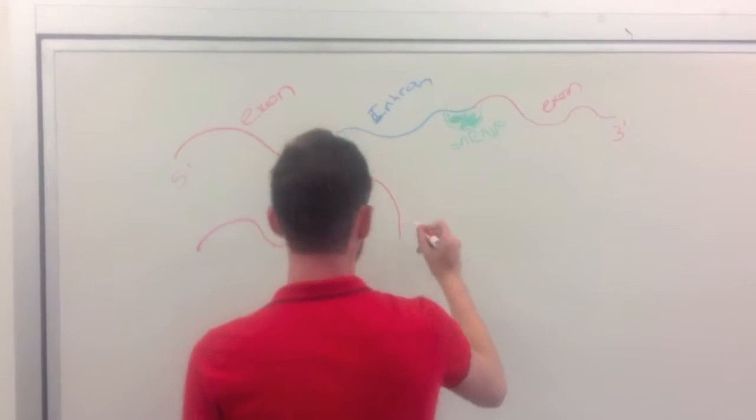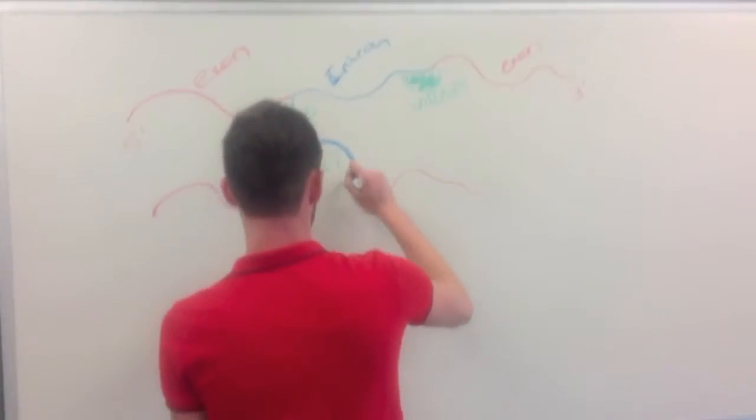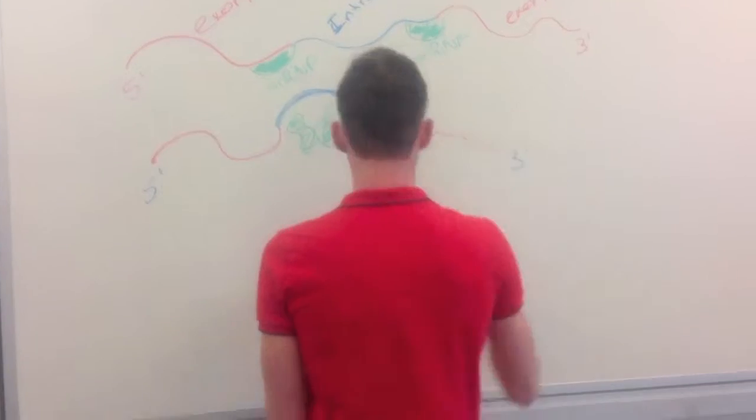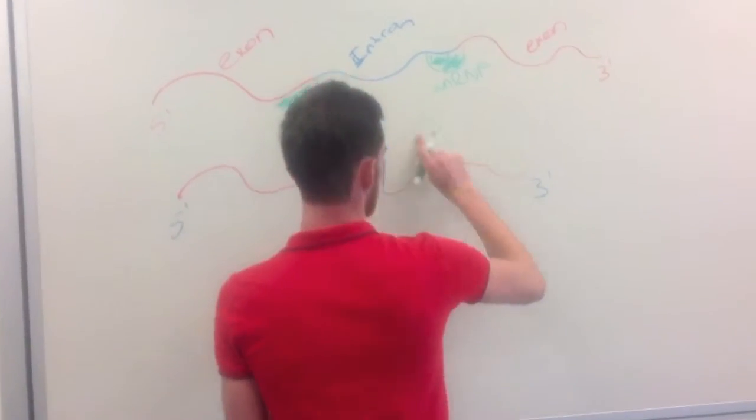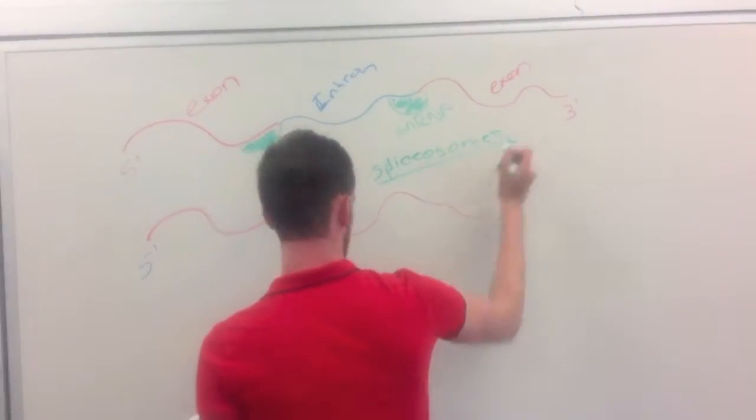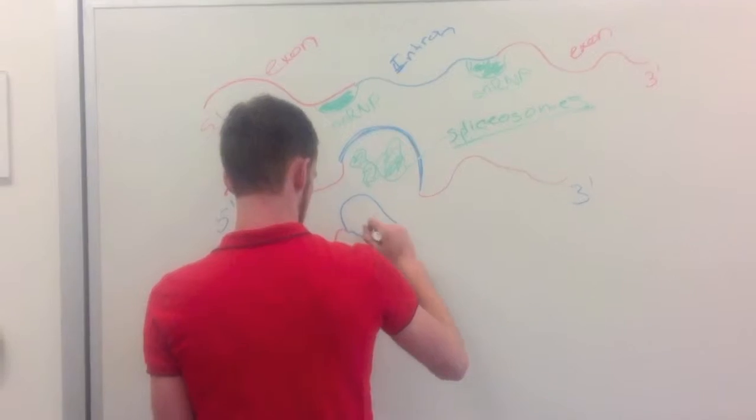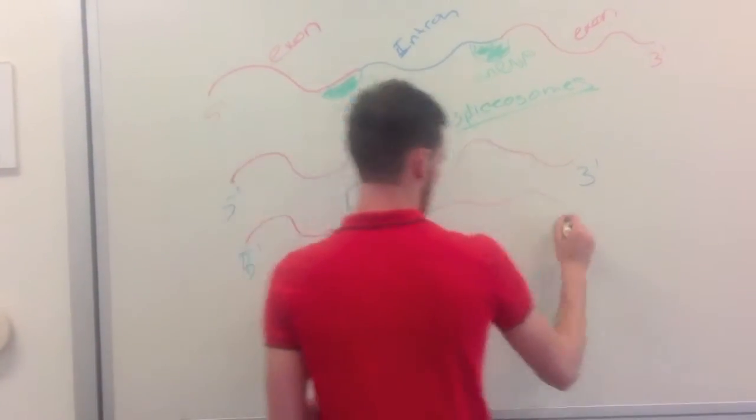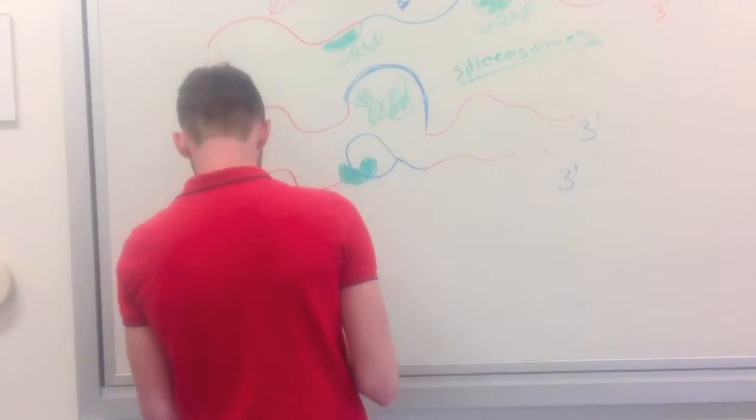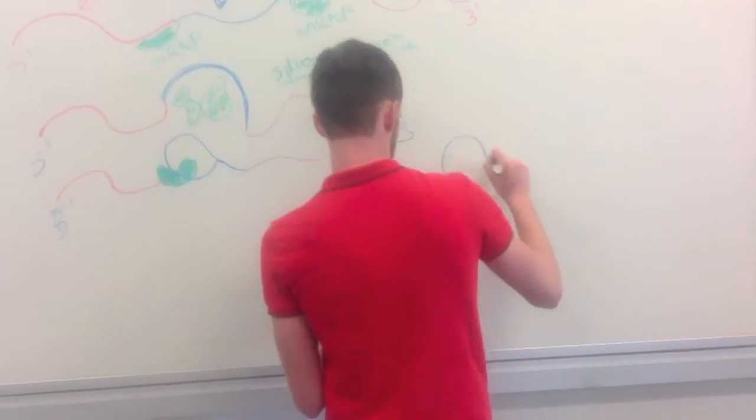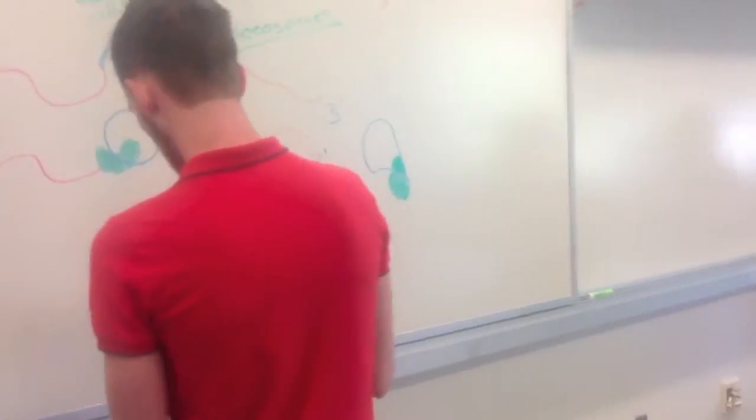A large RNA protein complex called a spliceosome makes a cut between the 5 prime exon and intron. Introns form a closed loop known as a lariat loop. The 3 prime exon is cleaved and spliced to the 5 prime exon.